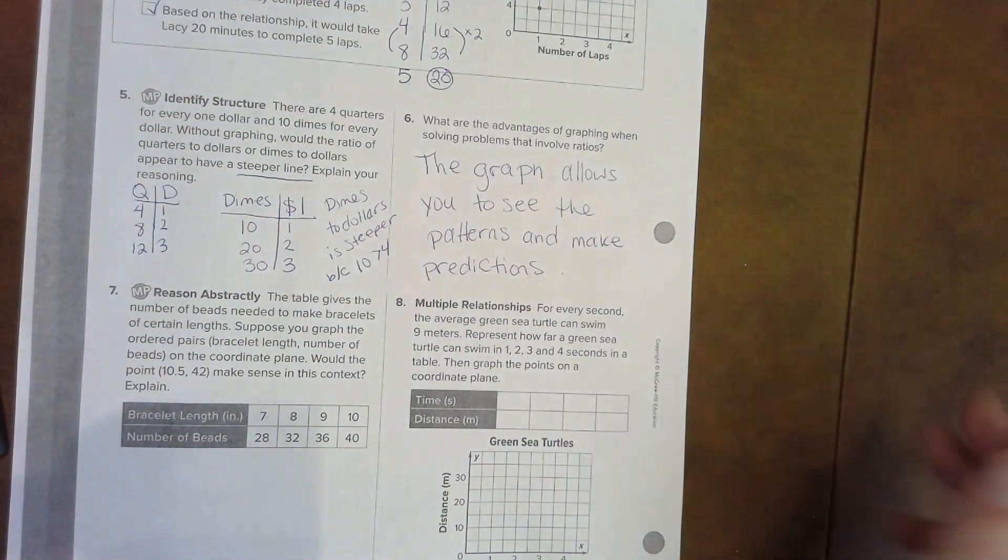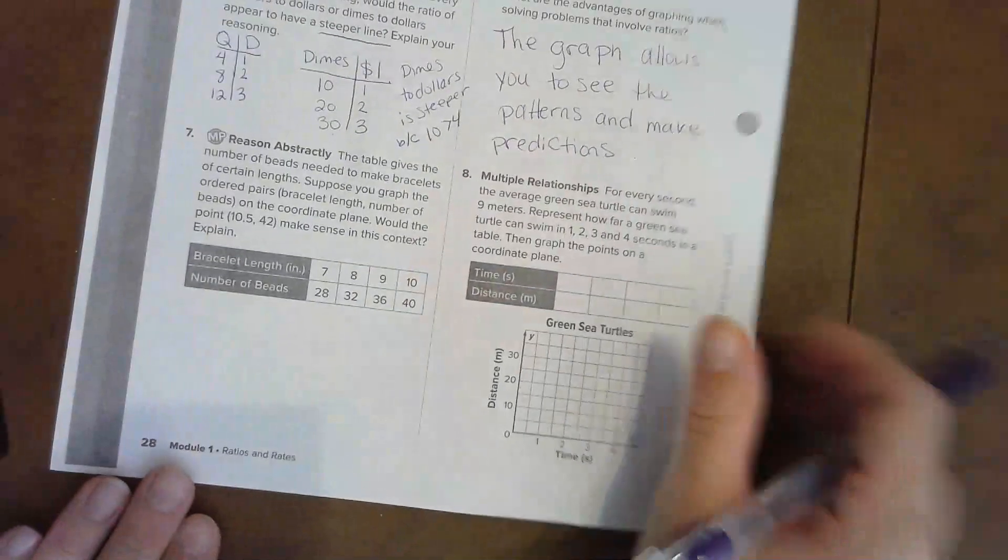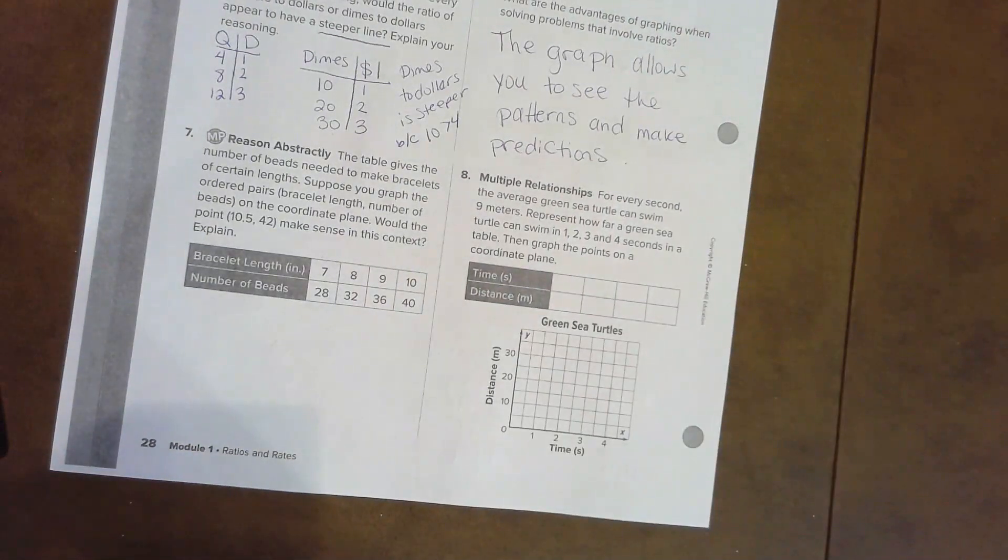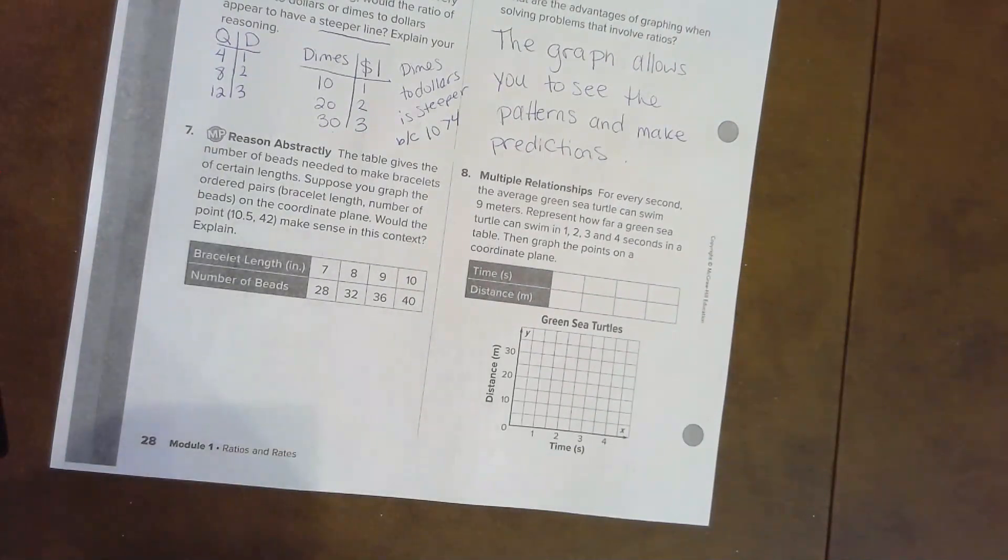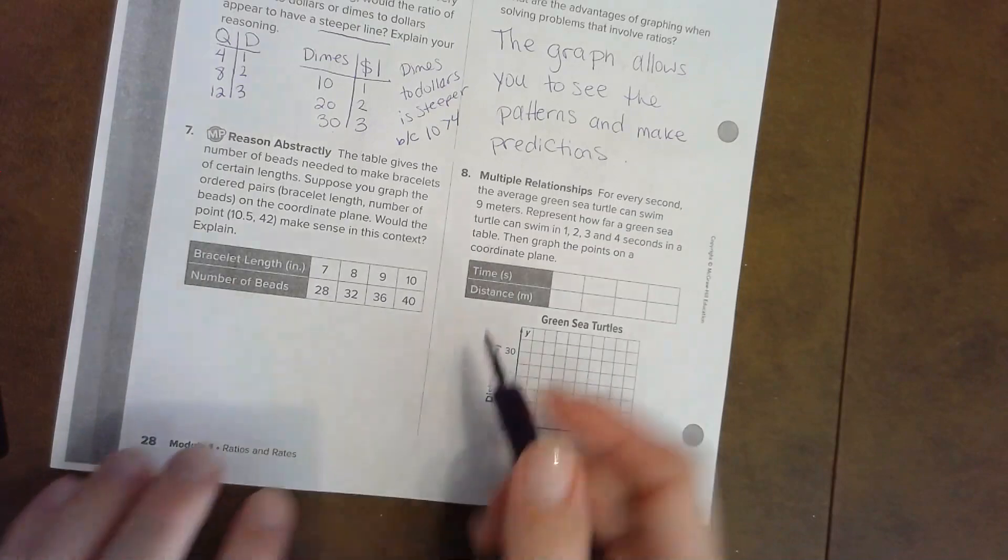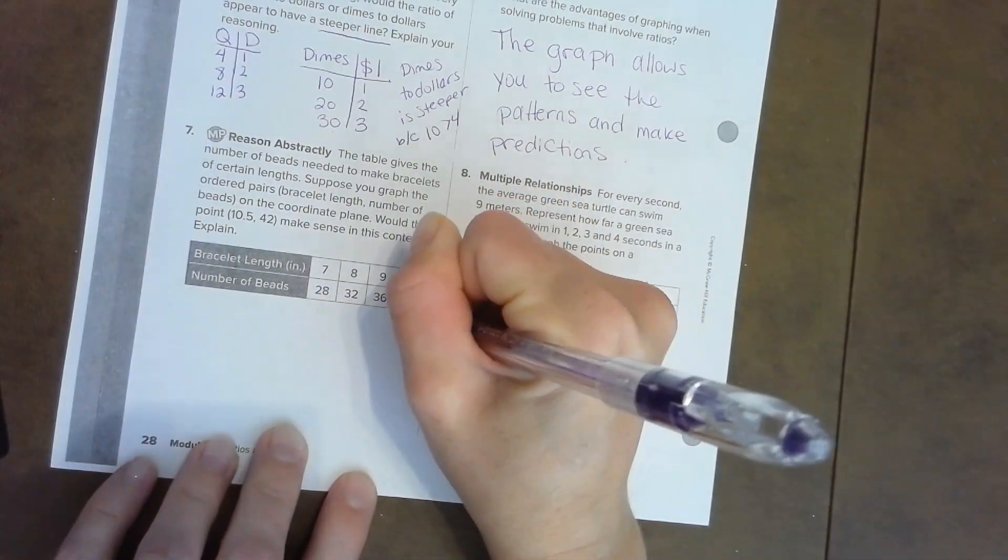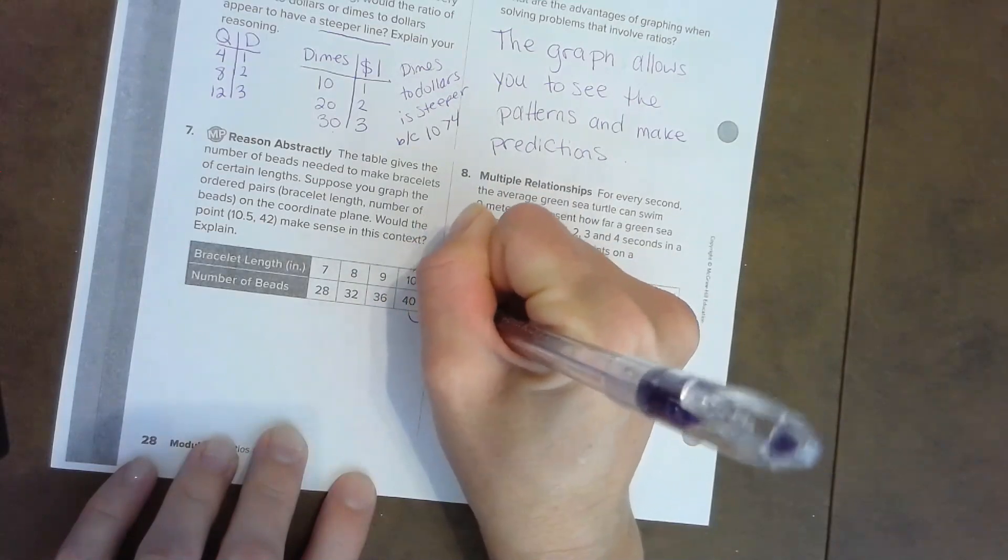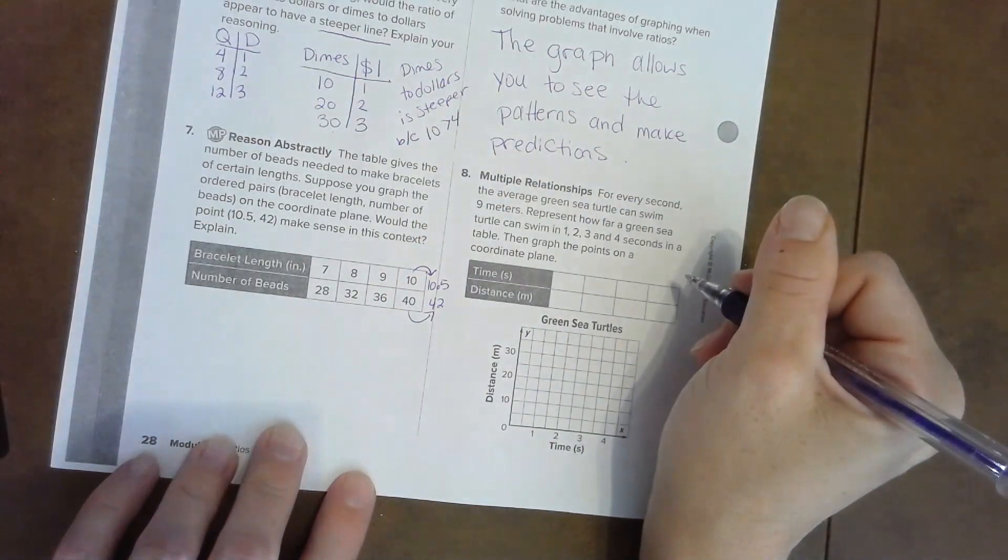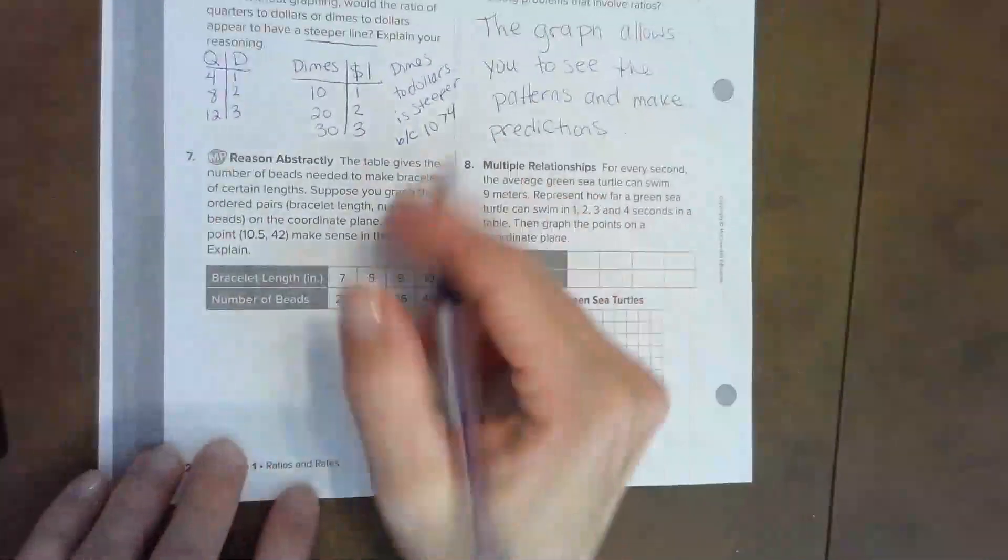Almost done. We're going to do the last two. The table gives the number of beads to make bracelets of certain lengths. Suppose you graph the ordered pairs. Would the point ten point five and forty-two make sense in this context? Well, notice how this is going just a little bit more. So will this be forty-two is what they're asking us.